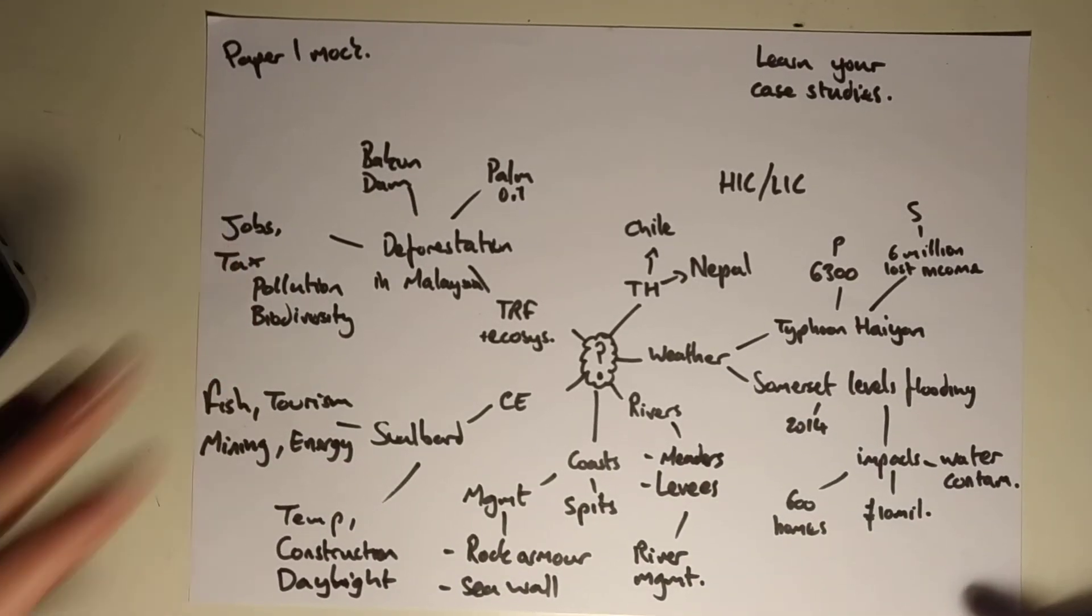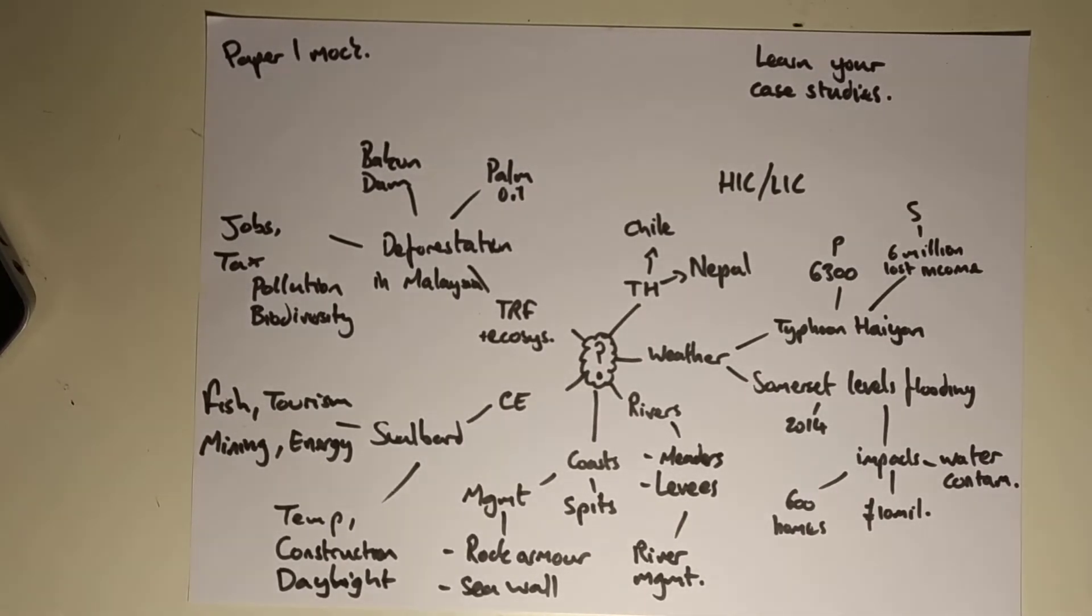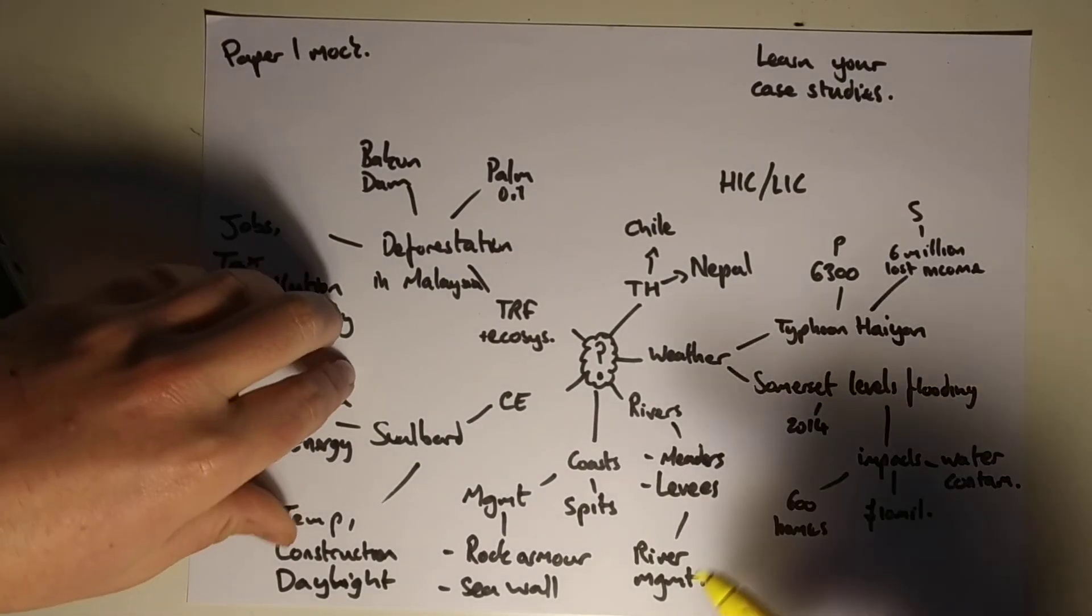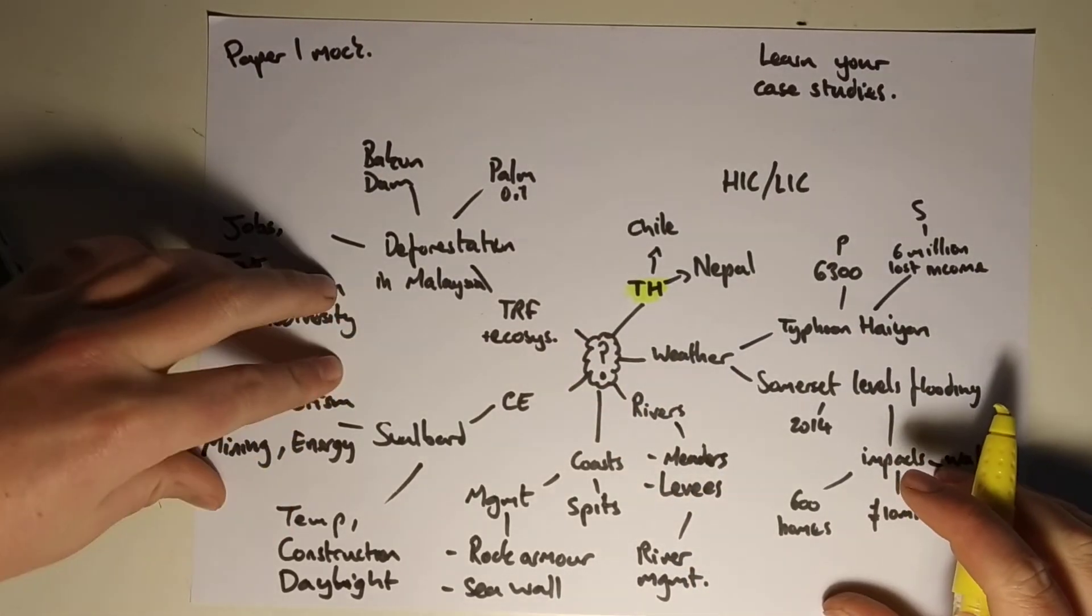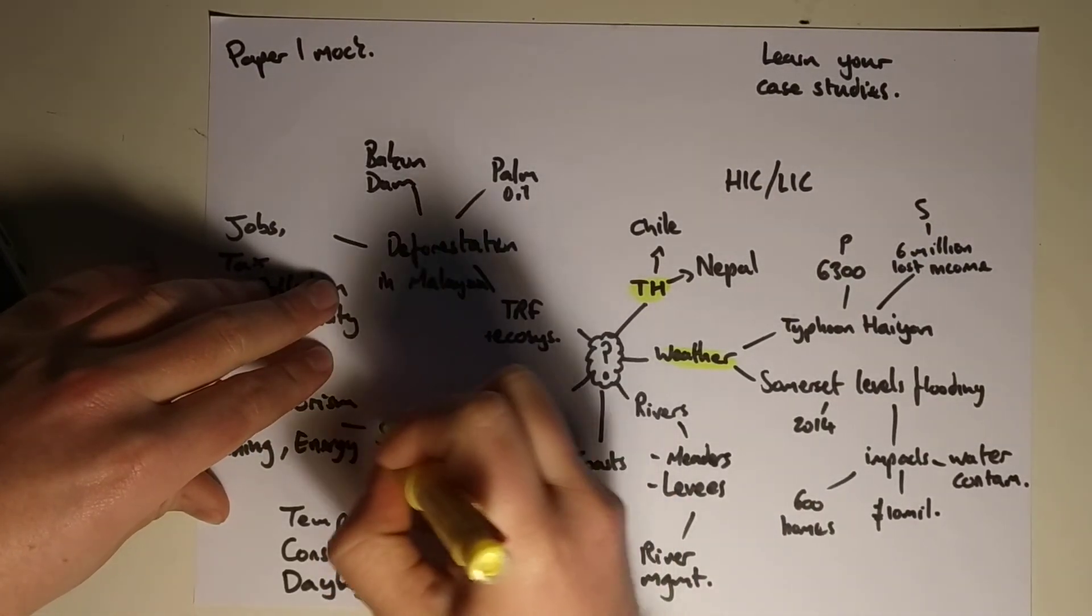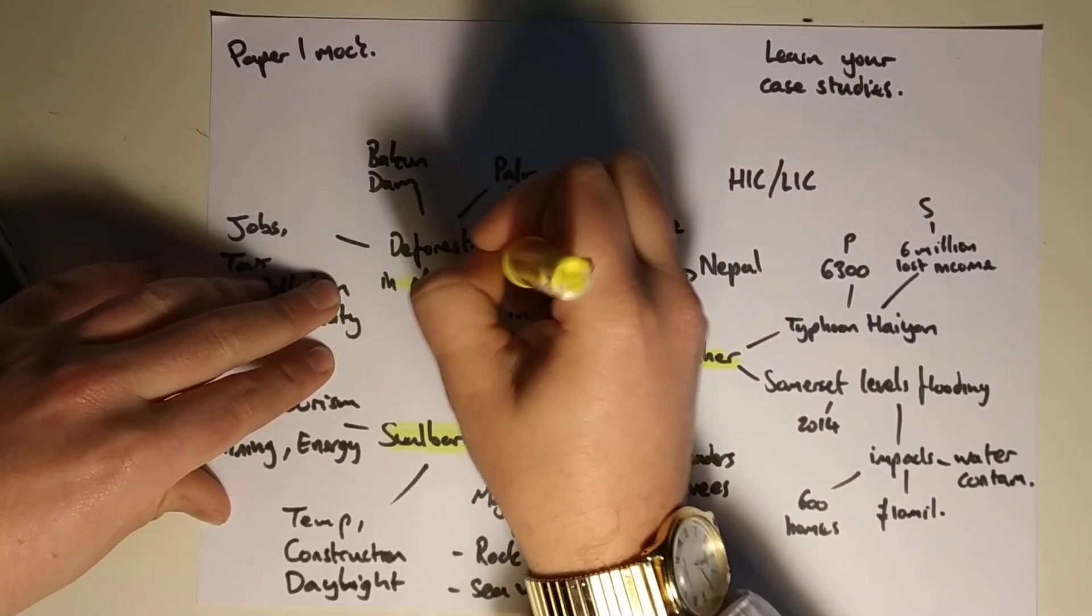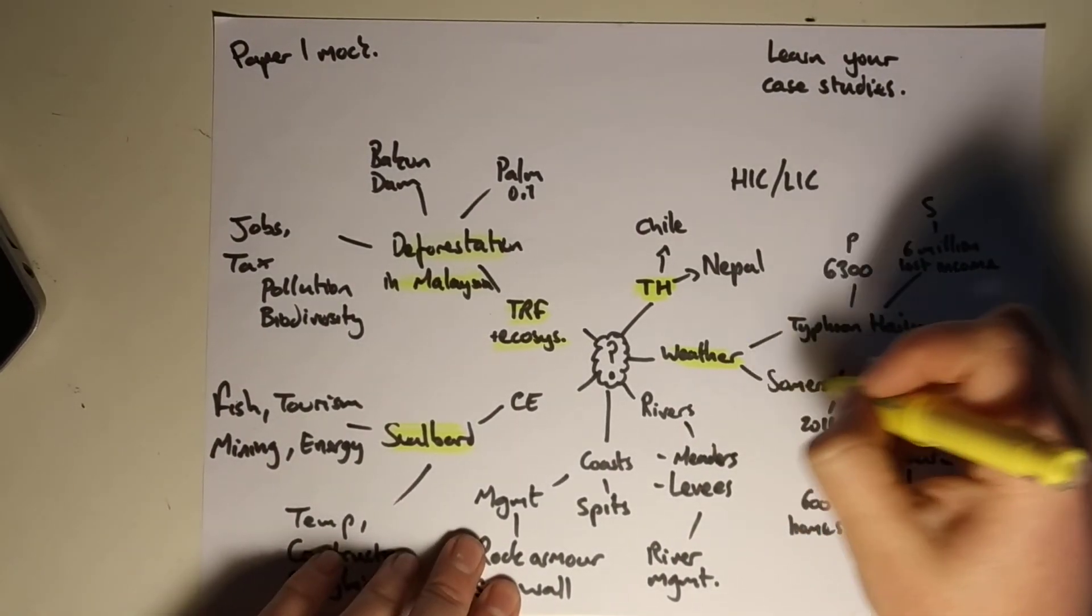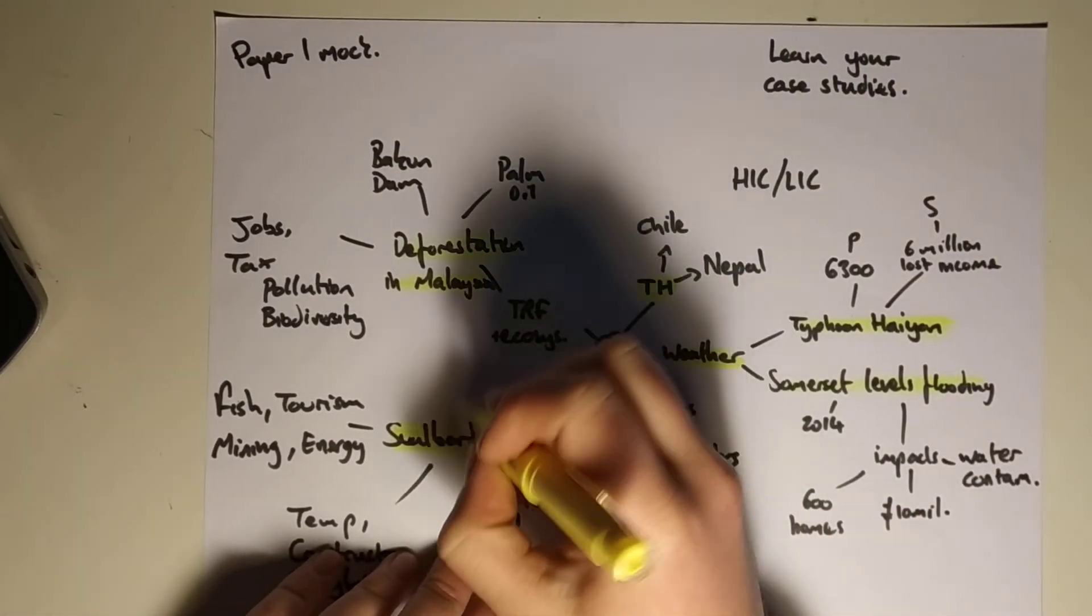Okay, so if I was just to circle these quickly, or just highlight these quickly, what are we going to get our potential nine markers on? Our potential nine markers are going to be somewhere around tectonic hazards, weather, Svalbard which is our cold environment, and tropical rainforest, which is basically looking at deforestation in Malaysia. There's lots of really good information online about all of these different things as well, about these different case studies.